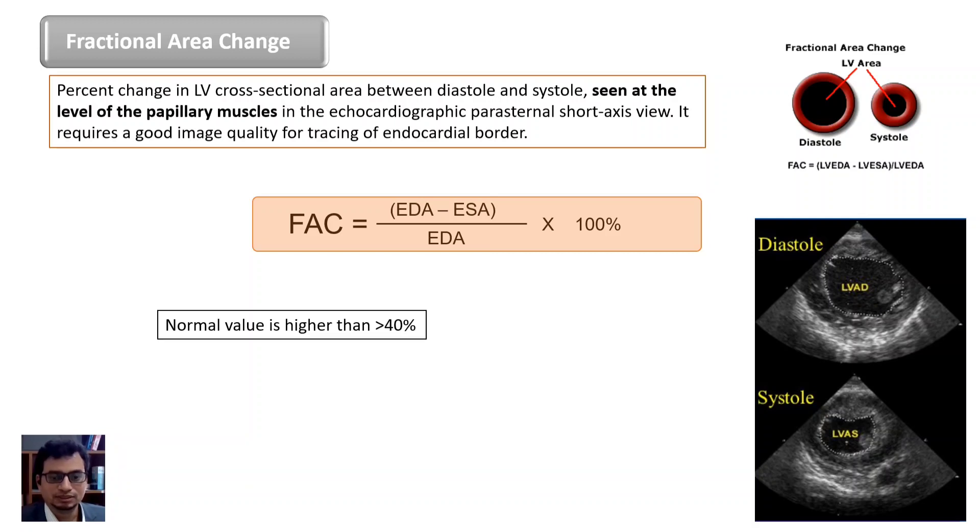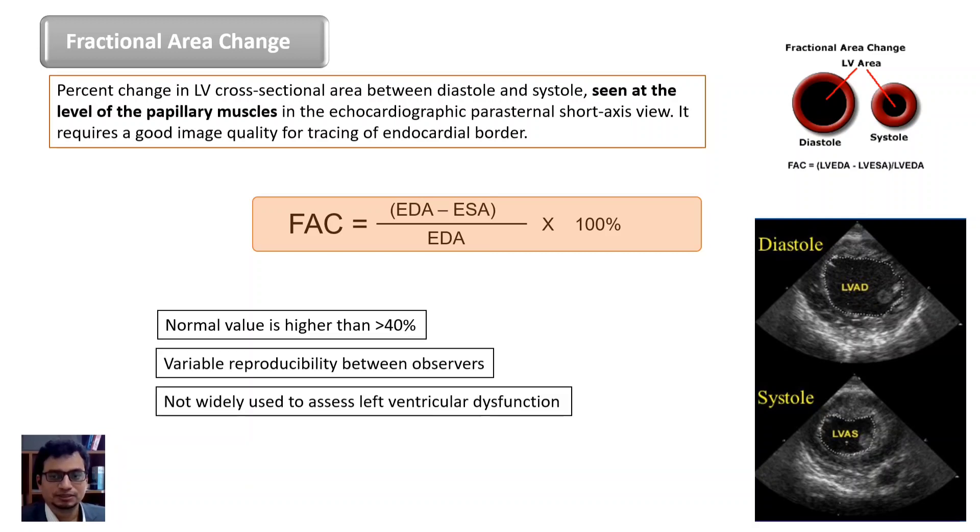Normal value is actually higher than 40% and again similar to previous method it requires a good image quality for tracing of endocardial border. Hence this method is highly operator dependent and great inter-observer variability exists. This method is also not recommended in modern echocardiography.